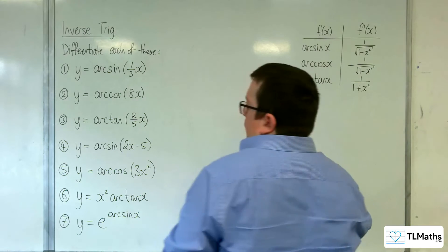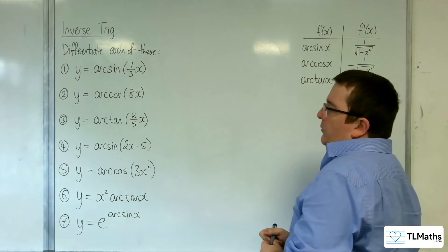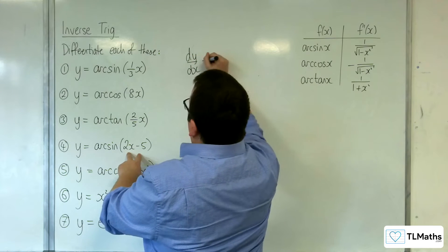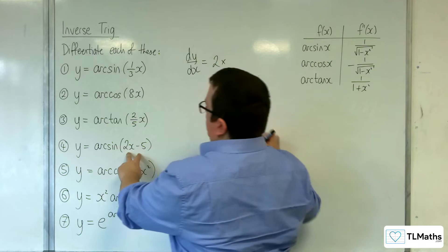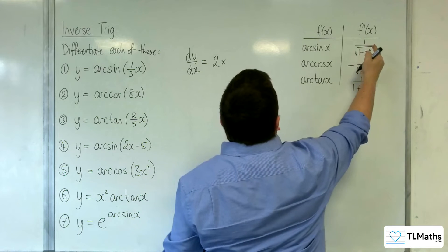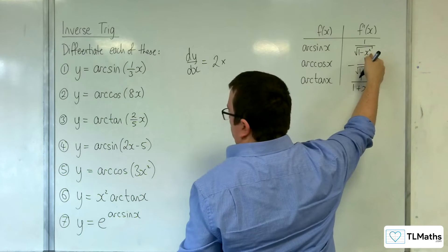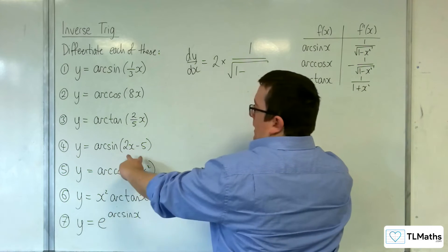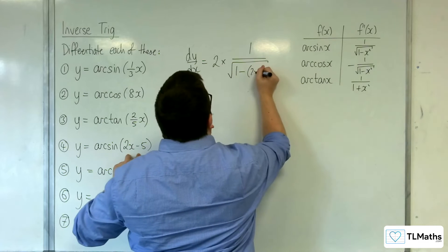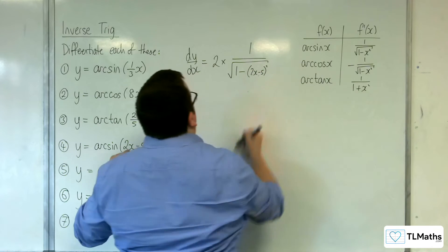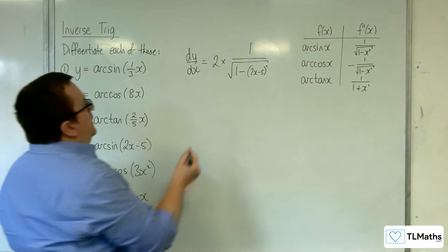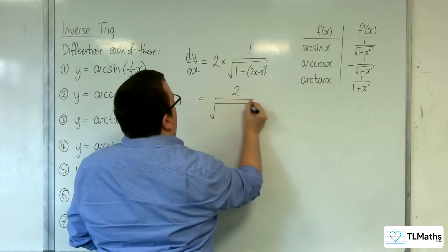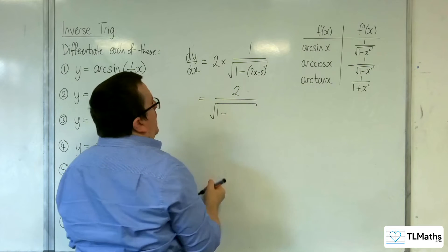Number four: y equals arc sine of two x minus five. The derivative of the inside is two, so that comes out the front. Arc sine differentiates to one over the square root of one minus x squared, so we have one over the square root of one minus (two x minus five) squared. That gives us two over the square root of one minus (two x minus five) squared.